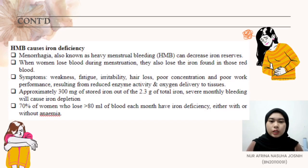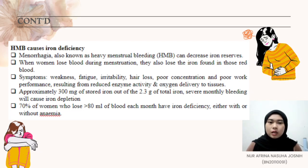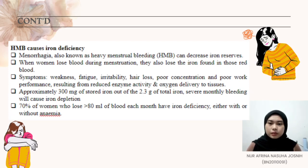Symptoms such as weakness, fatigue, irritability, hair loss, poor concentration, and poor work performance result from reduced enzyme activity and oxygen delivery to tissues. If blood cells do not have enough oxygen, one may feel tired and short of breath, as the heart works harder to pump blood more quickly to deliver oxygen to cells. These symptoms are common but may point to a larger problem, which is iron deficiency anemia. Iron deficiency or iron deficiency anemia may also be asymptomatic, and therefore some women may not experience any symptoms.